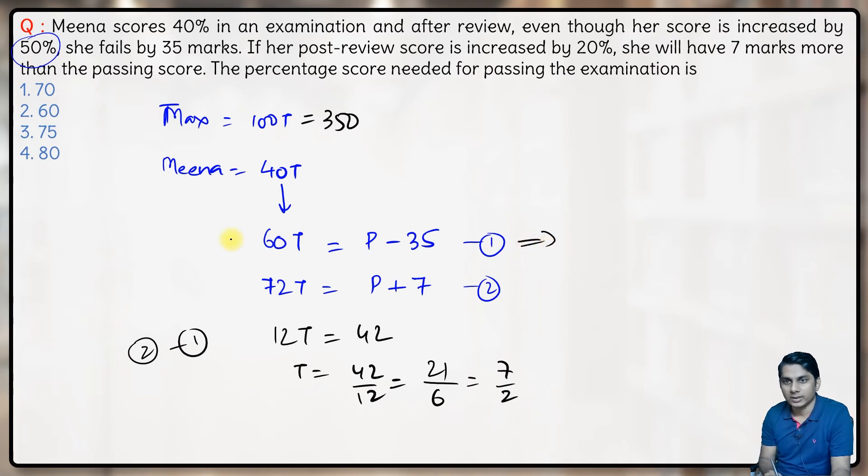If you look at this equation here, 60% of T, 60 into—sorry, T is 7 by 2 actually—60 into 7 by 2 is equal to P minus 35. So this gives us 210 is equal to P minus 35, that means P is equal to 245.